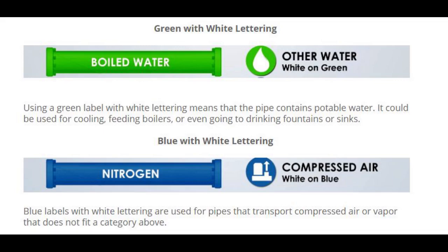Green with white lettering: Using a green label with white lettering means that the pipe contains potable water. It could be used for cooling, feeding boilers, or even going to drinking fountains or sinks.